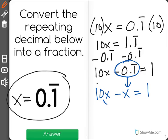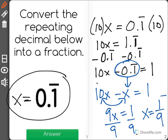Now I have like terms. 10x minus x, well that's equal to 9x. 9x equals 1. And to get x by itself, I have to divide both sides by 9. So that tells me that x equals 1/9.